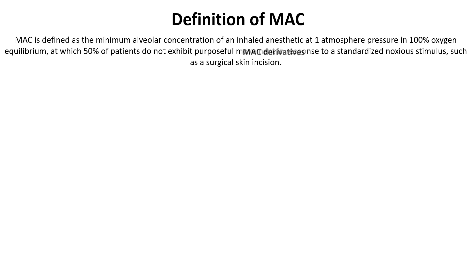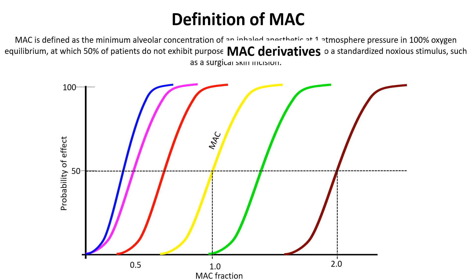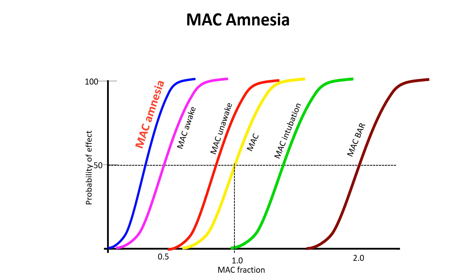Though the effect of anesthetics as measured by MAC is tied to immobility, there are other endpoints that can be used to measure potency. These are called MAC derivatives. Several specific MAC derivatives are recognized, including MAC amnesia, MAC awake, MAC unawake, MAC intubation, and MAC BAR. MAC amnesia is the anesthetic concentration required to suppress the recollection of a noxious stimulus in 50% of patients, typically around 0.25 MAC. The primary goal of achieving MAC amnesia is to prevent the formation of explicit episodic memories during surgical or procedural events, as failure to do so may lead to the development of post-traumatic stress disorder.